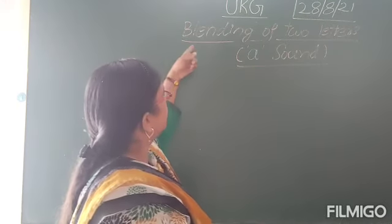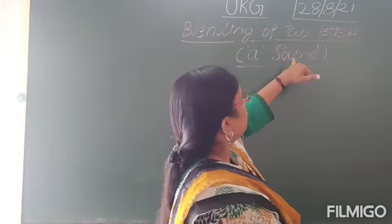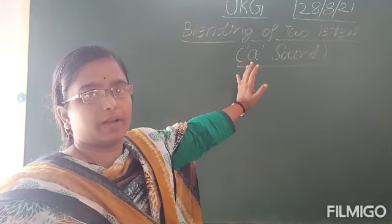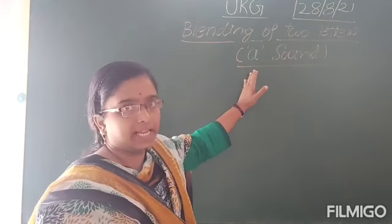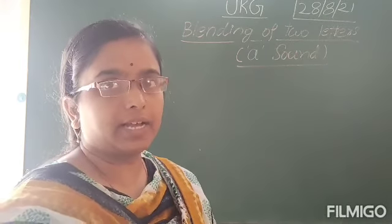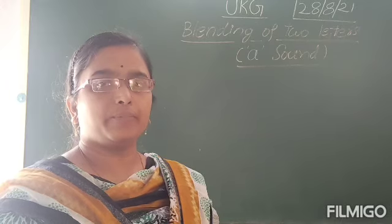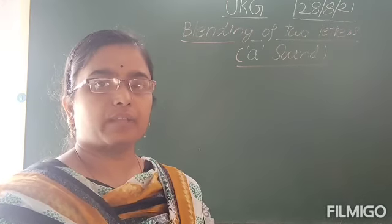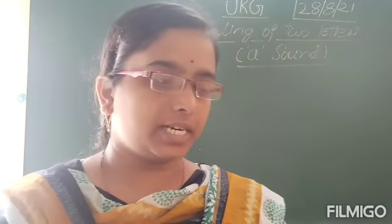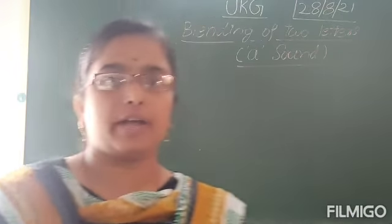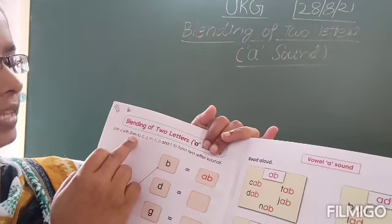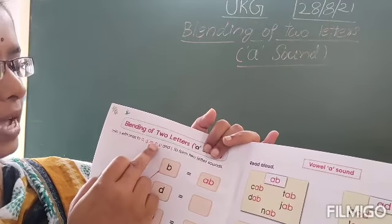Now you can do blending of two letters. That is A sound. First, what is A? A is the vowel. You can add A with a consonant. What is the phonics sound of A? A — A for apple, A for ant. The phonics sound is A. Now A with consonants: B, D, G, M, N, P, and T, to form two-letter sounds.